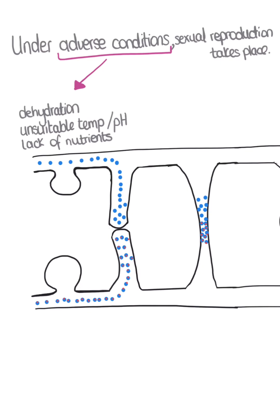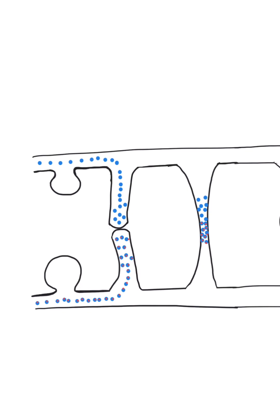Sexual reproduction occurs in hyphae which look very similar but are chemically different. There are positive strains of hyphae and negative strains of hyphae. During sexual reproduction, the hyphae from opposite strains grow close together.